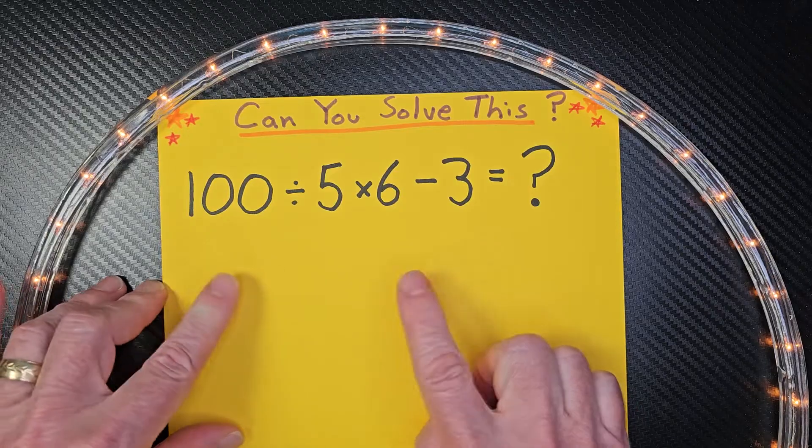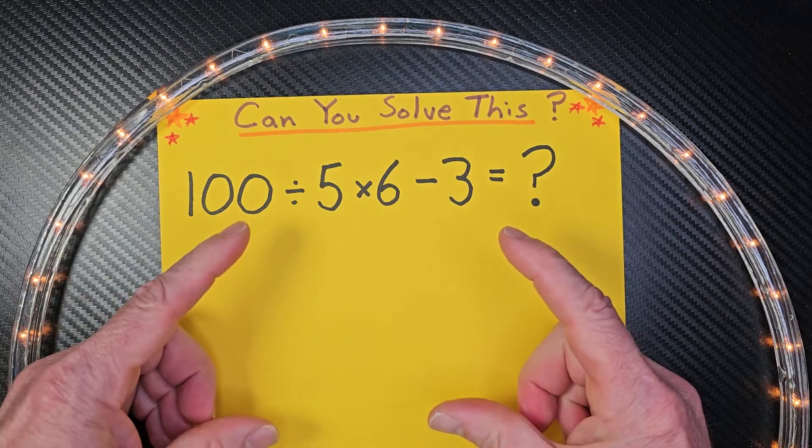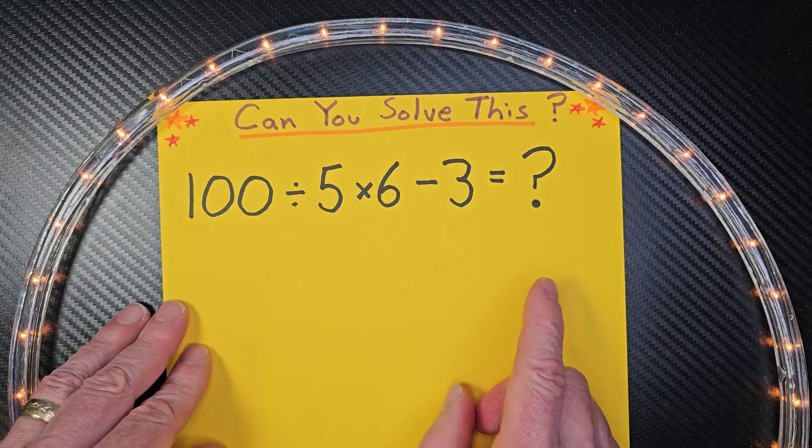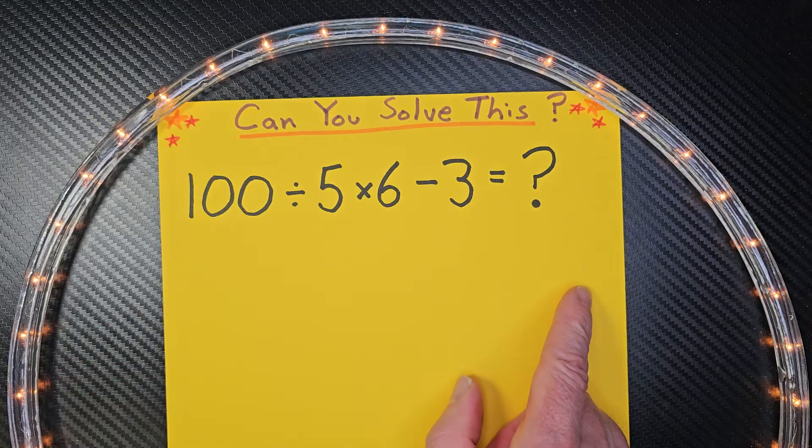Order of operations, if you're not familiar with it, you need to do what's inside parentheses first, then exponents, then multiplication and division from left to right, and finally addition and subtraction from left to right.